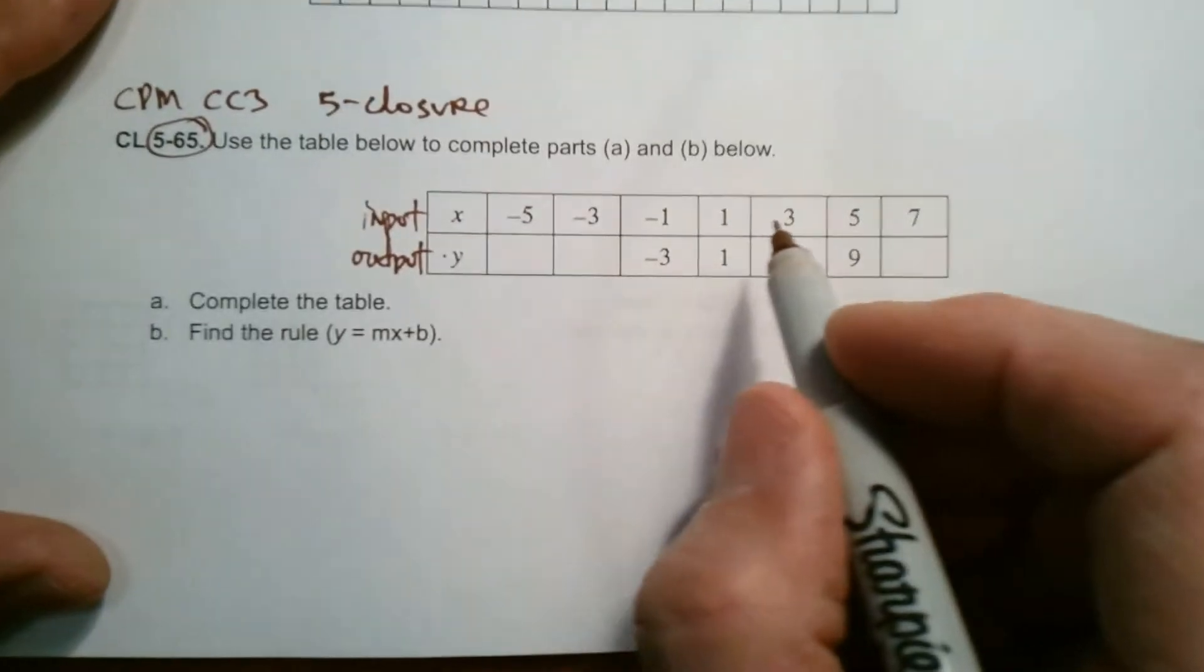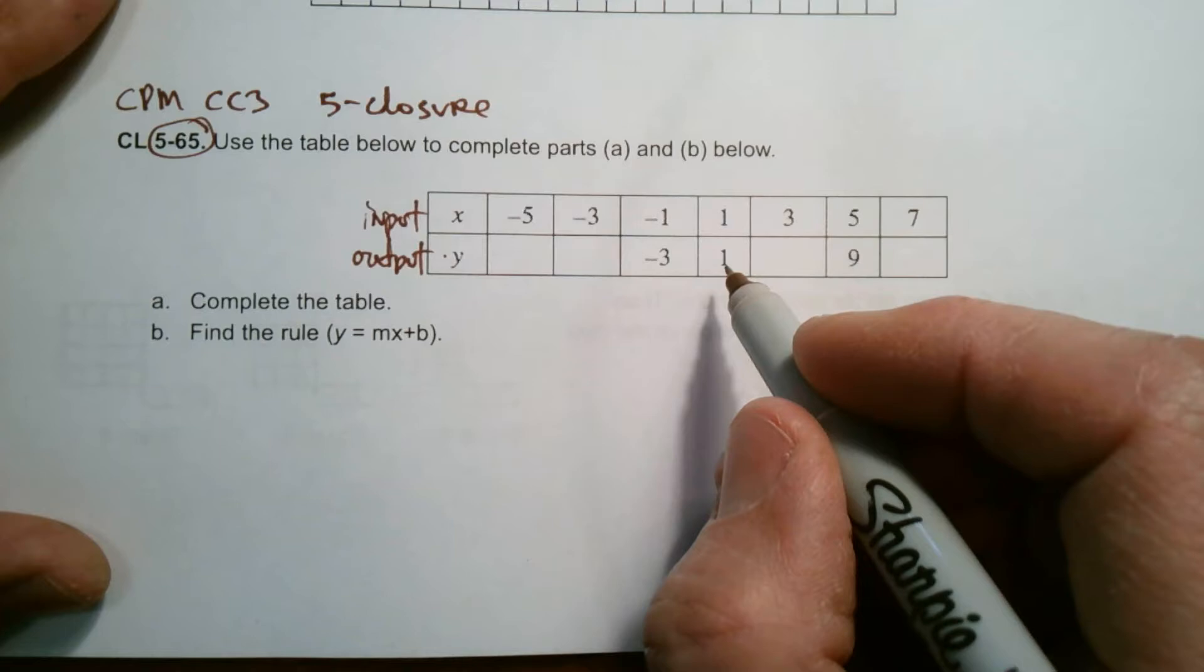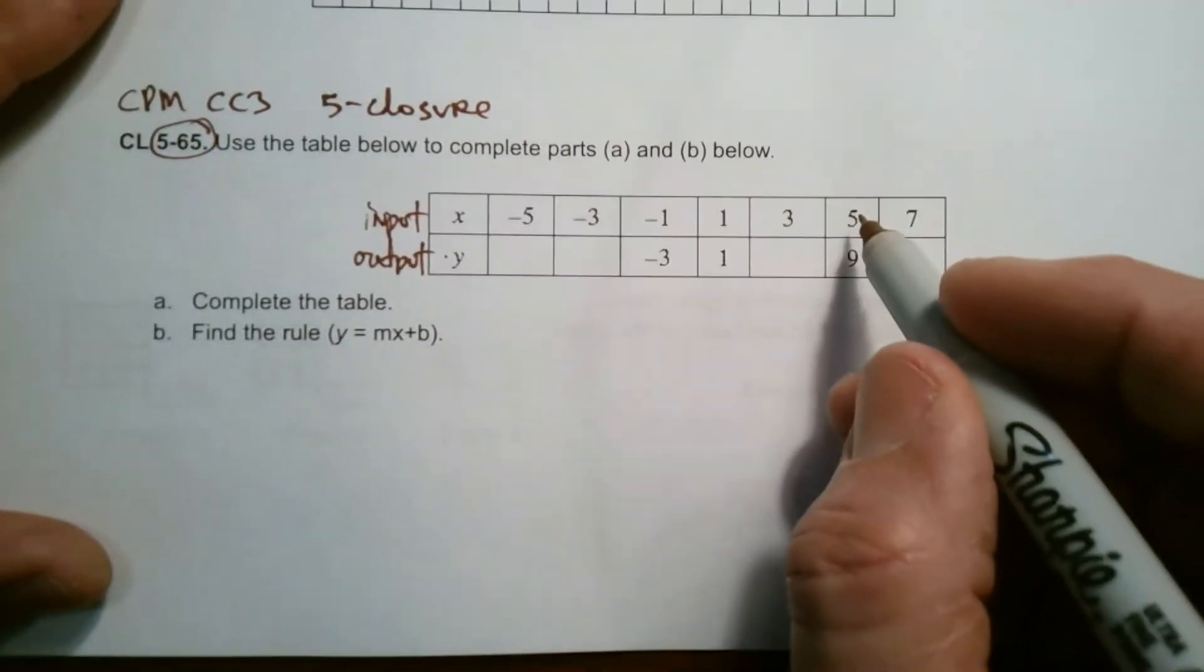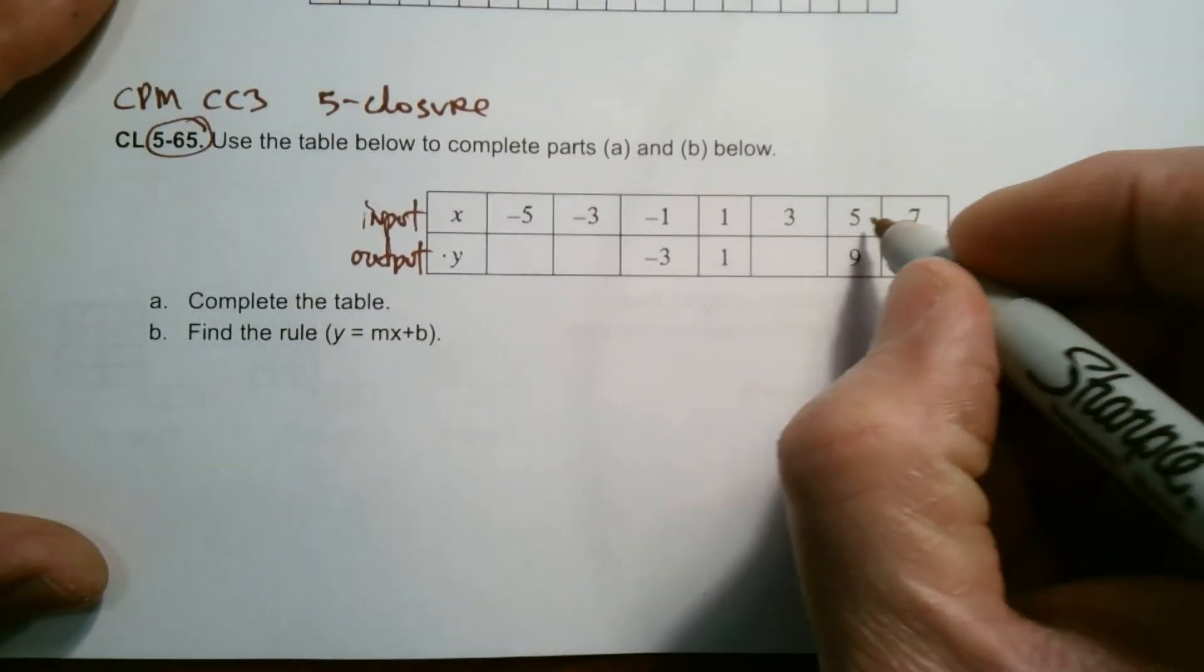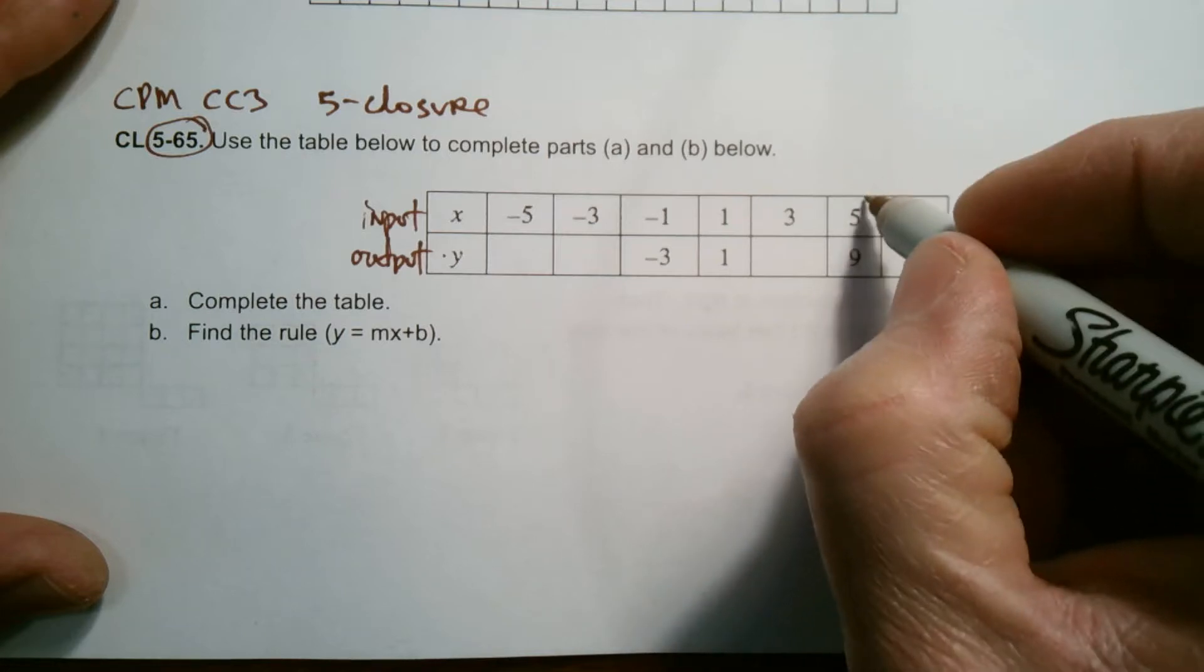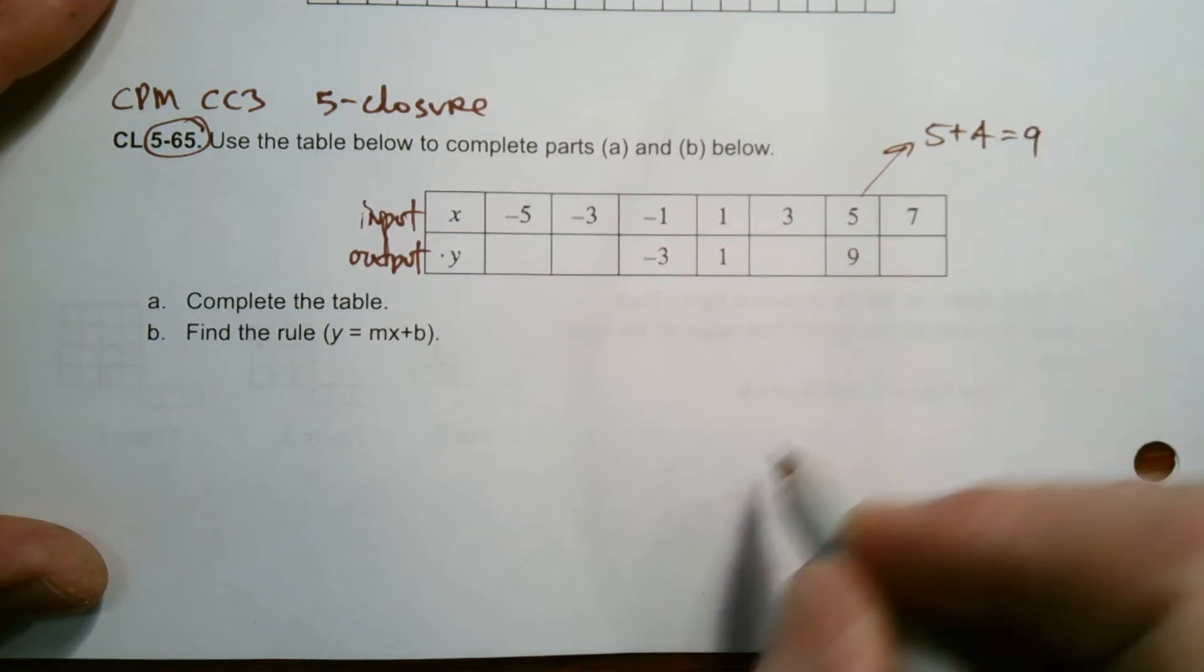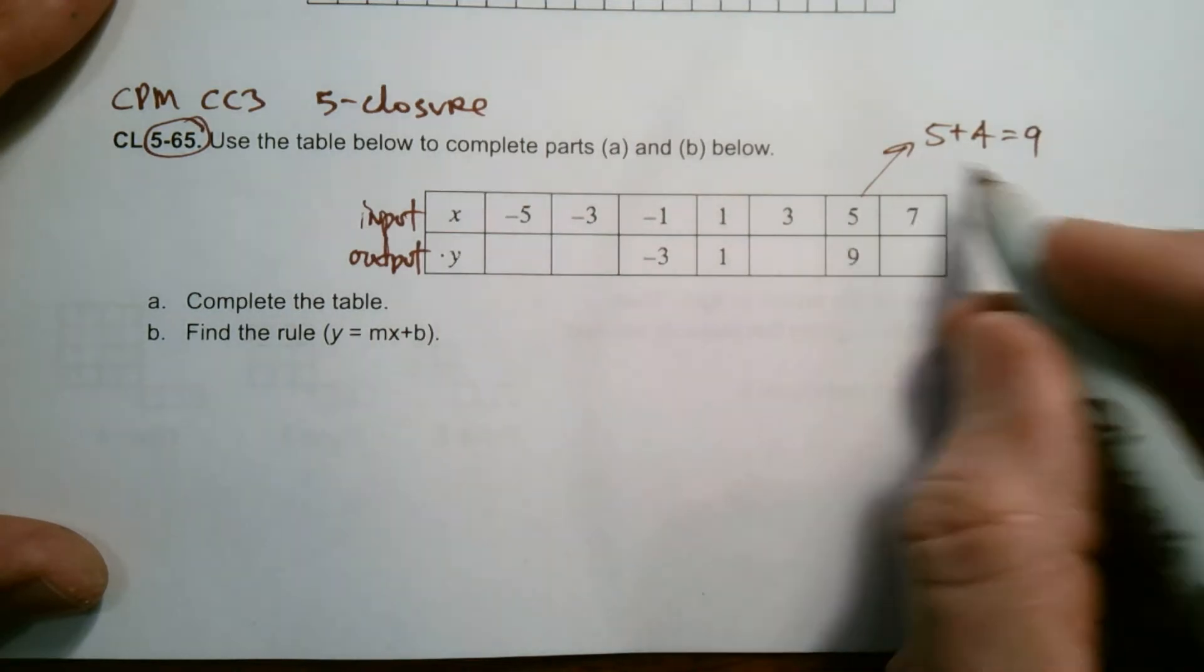So I like to start off with the positive numbers and not equal positive numbers because sometimes this one and one kind of throws you off. So I'm going to go to the five to nine. What math can I do to the five to get to the nine? So I could start by saying, well, I know five plus four is nine. So five plus four is nine.